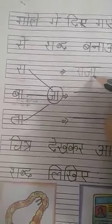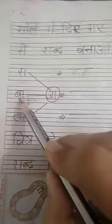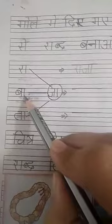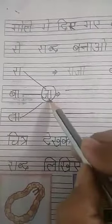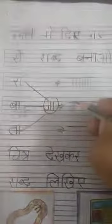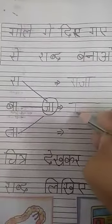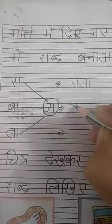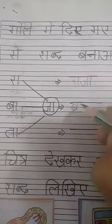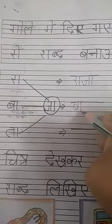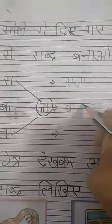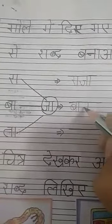Ra, Ja. Next: with Bha, aa ki matra is given, so what will you speak? Ba, Ja. Right here: Ba, Ja. Standing line, circle, and circle down. Standing line, make aa ki matra from behind the consonant. Ba, Ja.